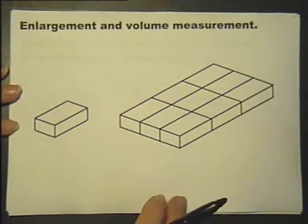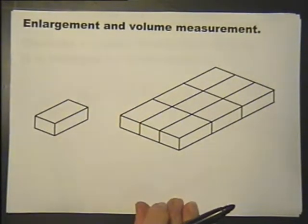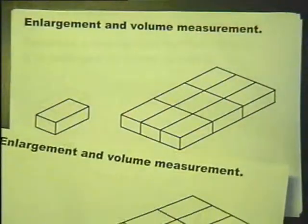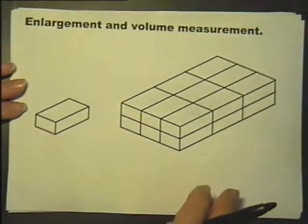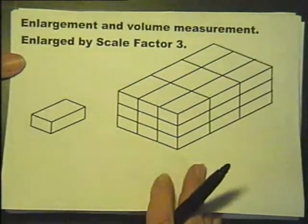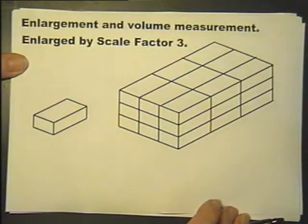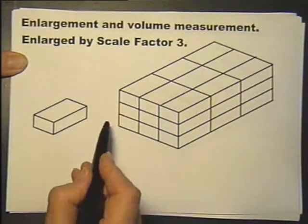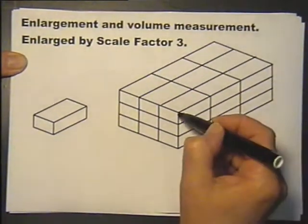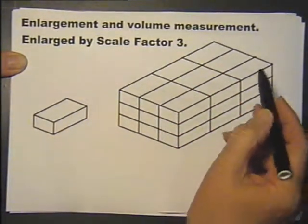So here we have it 3 times longer, 3 times wider, and now we have the full enlargement of scale factor 3 because it's 3 times wider, 3 times longer, and 3 times higher. How many blocks in there?